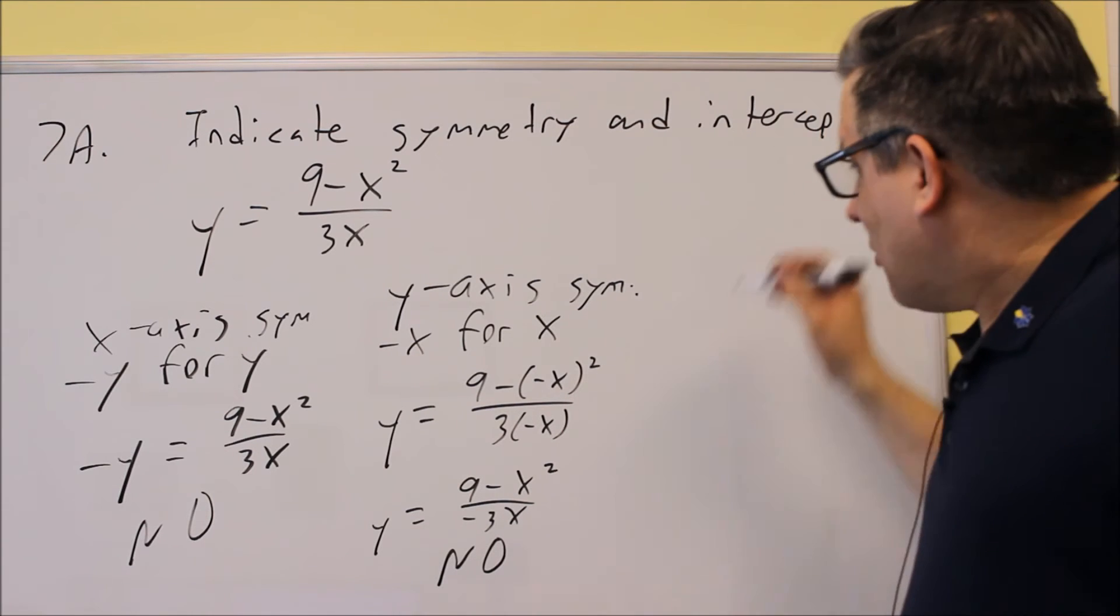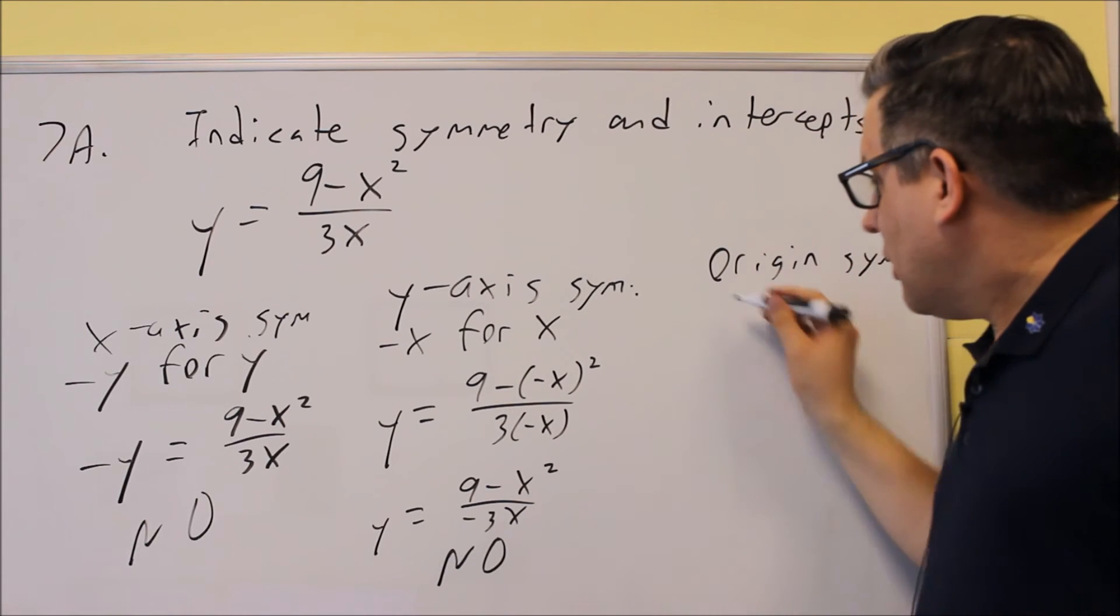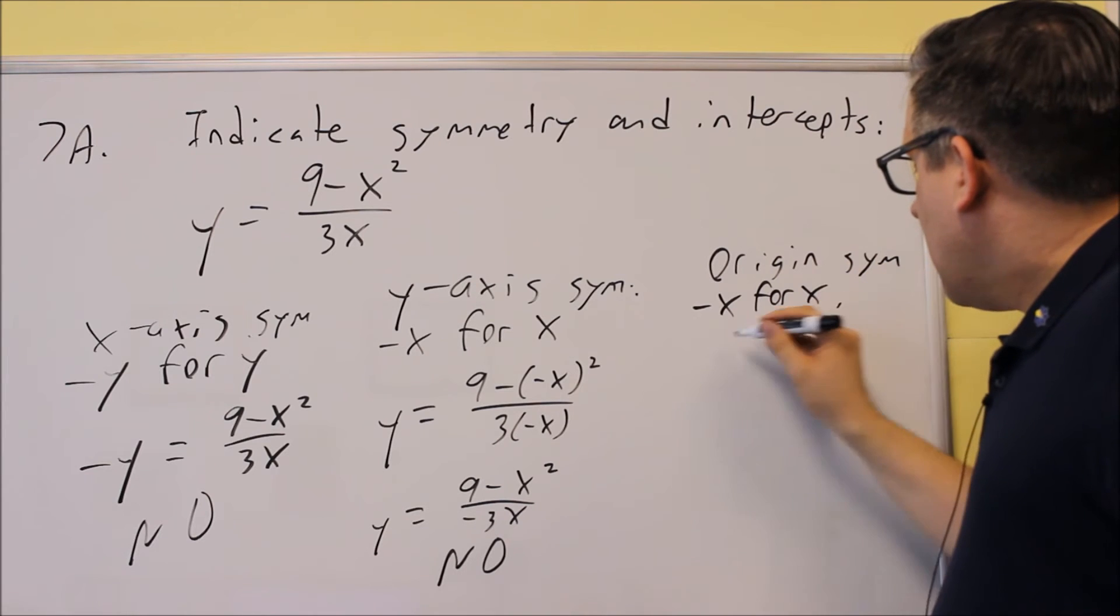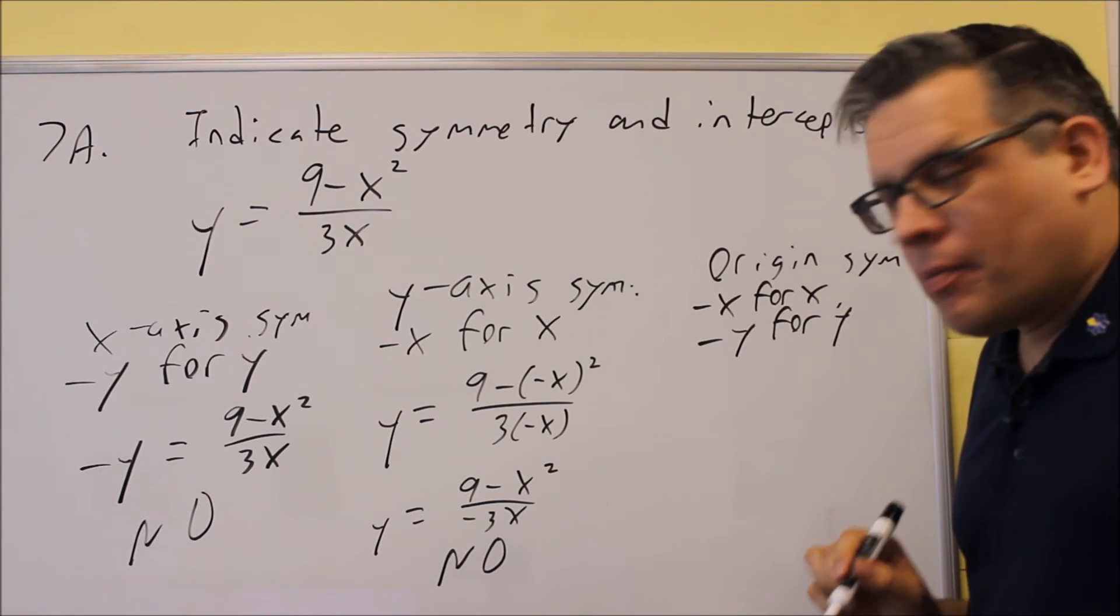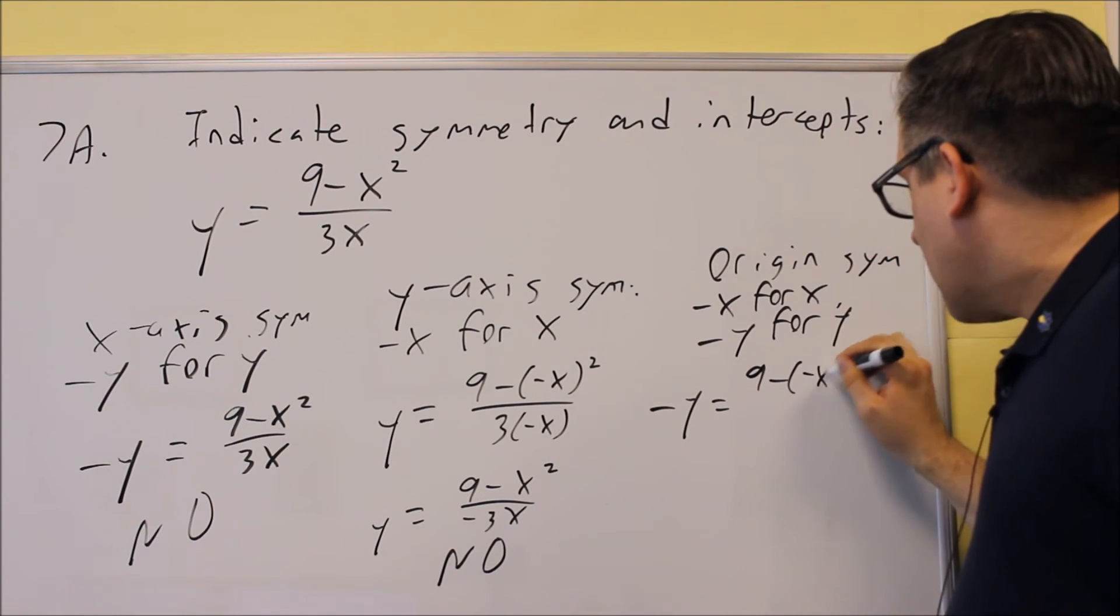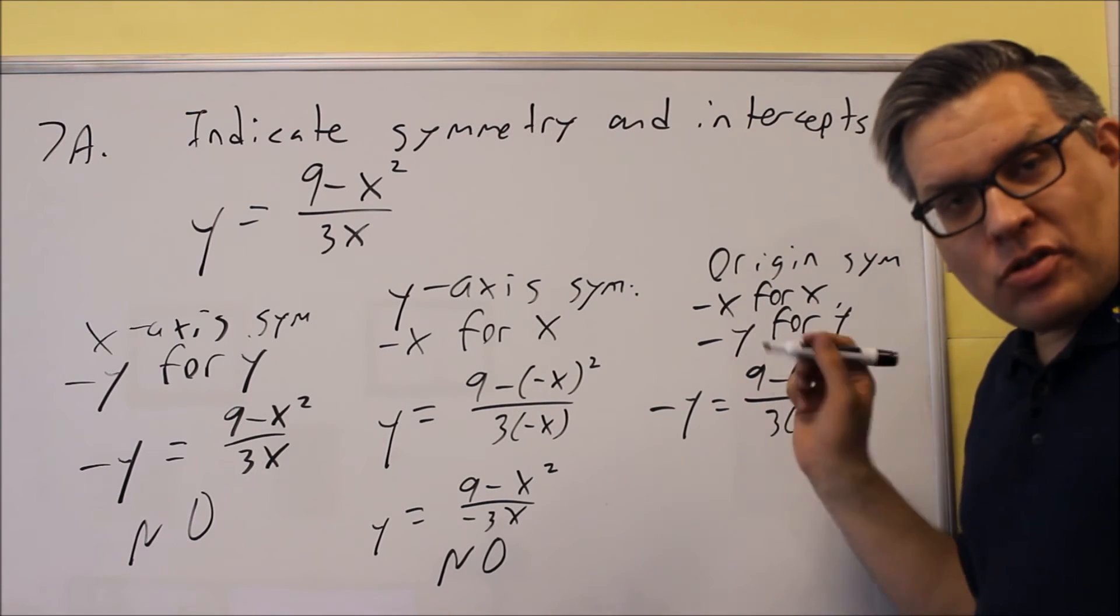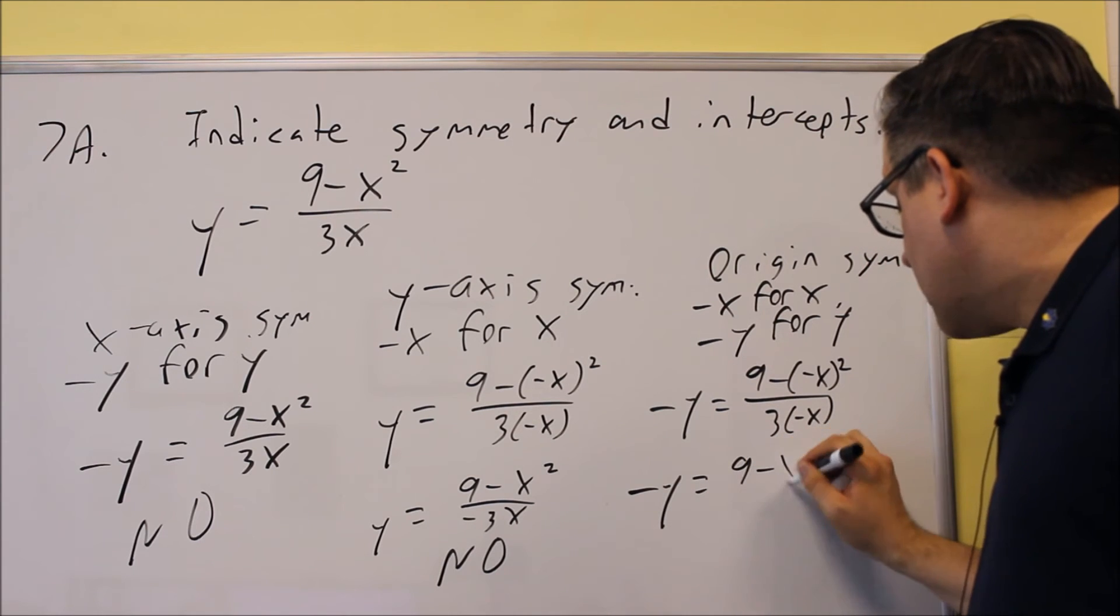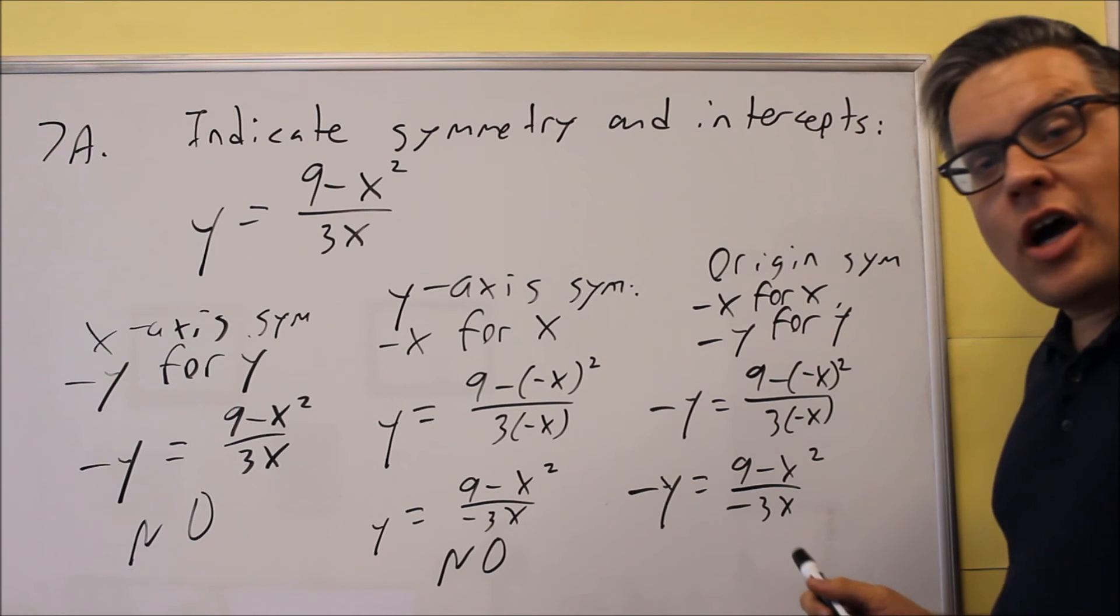So now the last test I'm going to do is for the origin symmetry, and this one you do both, negative x for x, and negative y for y, we're going to do both. So let's do that, we have -y = (9 - (-x)²)/(3 × (-x)). I'm going to simplify it. So I get -y = (9 - x²)/(-3x).